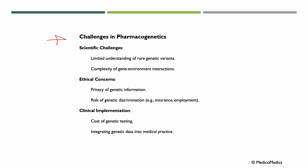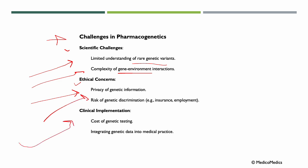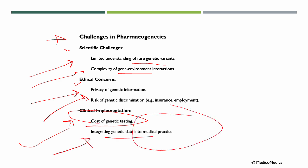Some challenges in pharmacogenetics include scientific issues like limited understanding of rare genetic variants and the complexity of gene-environment interactions. There are also ethical concerns like privacy of genetic information and the risk of genetic discrimination. In clinical implementation, challenges include the cost of genetic testing and integrating genetic data into medical practice. It has great potential, but challenges like cost and privacy need to be addressed.